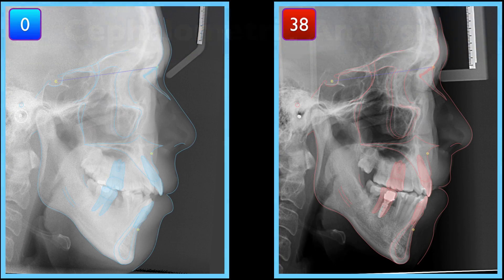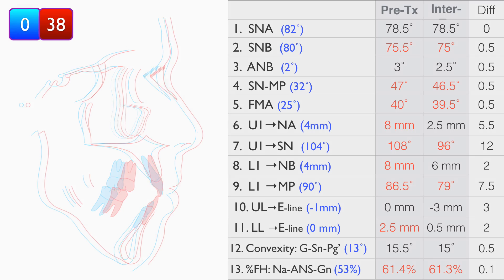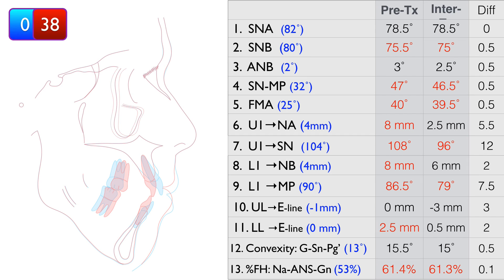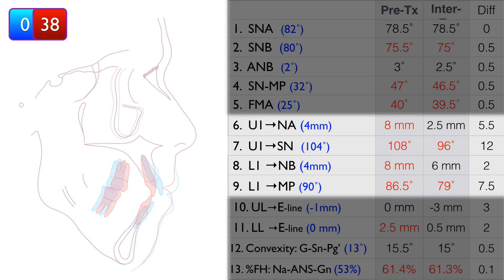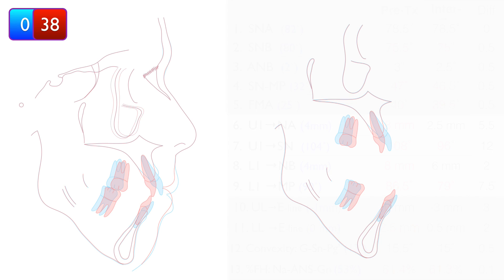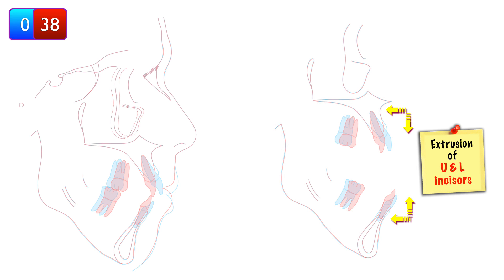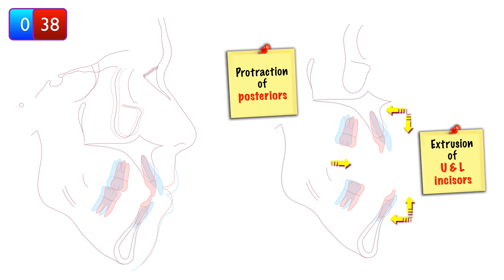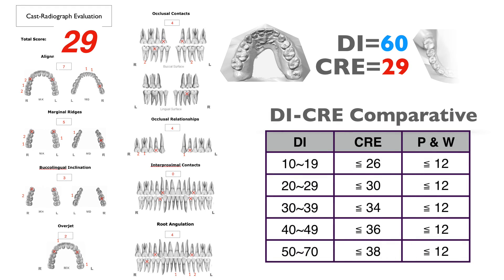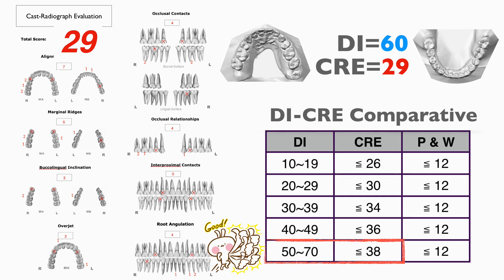Looking at before and after superimposition tracings, both upper and lower incisors were retroclined up to 12 degrees. The anterior open bite improvement was attributed to the extrusion of the upper and lower incisors. The vertical dimension decreased a little because of posterior protraction. The CRE was a total of 29 points. From the DICIE comparative table, the treatment result was rated as good.